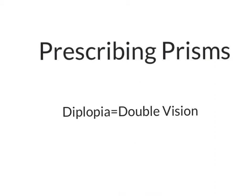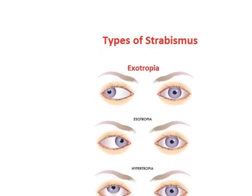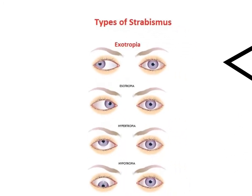This video is on prescribing prisms. You prescribe prisms for people suffering from diplopia, also known as double vision. People suffering from diplopia can sometimes have an eye turn. There are different types of eye turn: the person's eye can be facing outwards, inwards, upwards, or downwards.